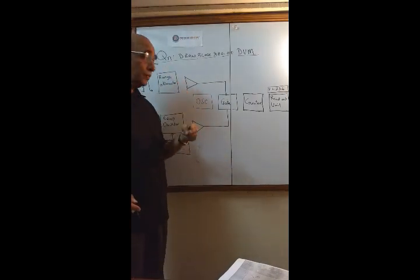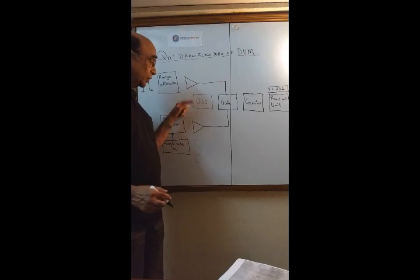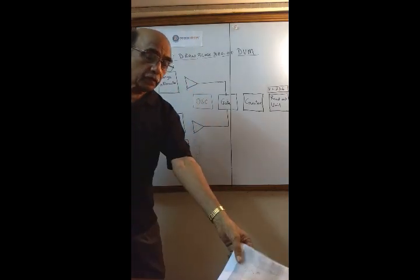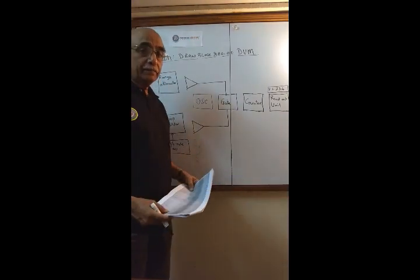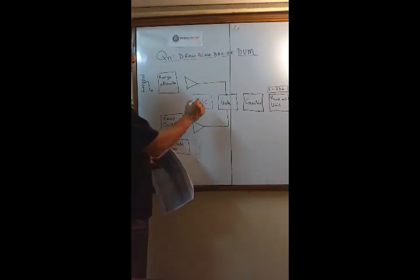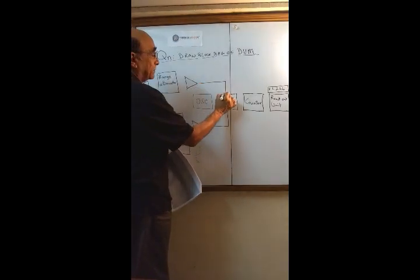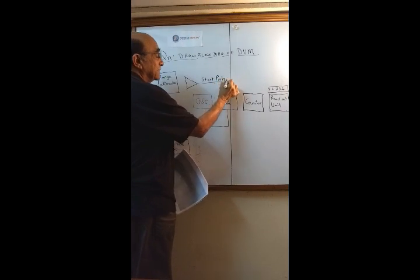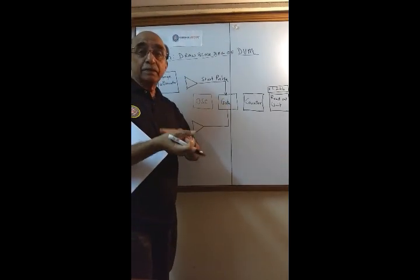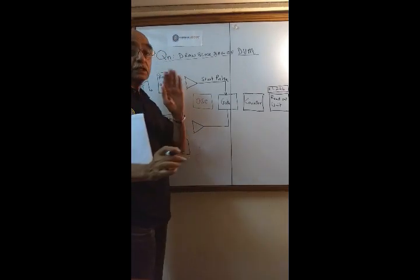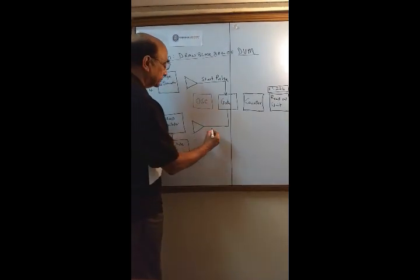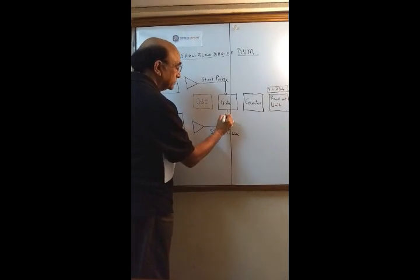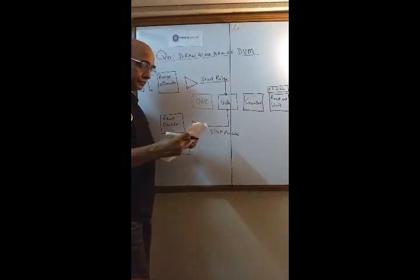Next, draw two amplifiers here. Then you draw the start pulse here and stop pulse.